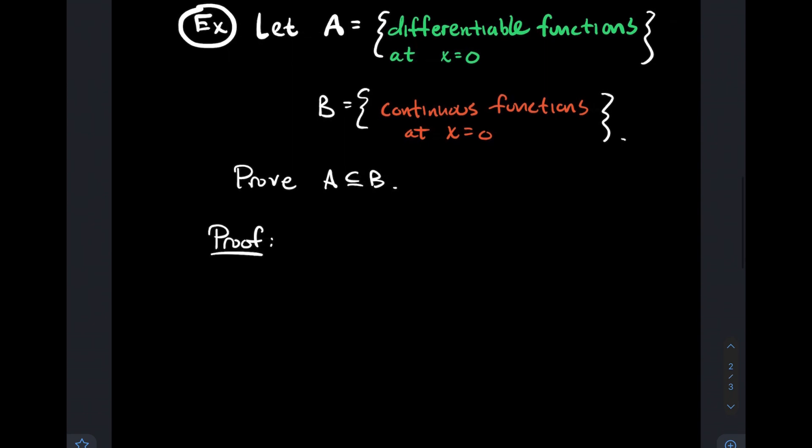Here is the proof. We want to keep that strategy in mind. Part one: let f be an element of A. Where do we start? The goal here is to try to conclude f is an element of B. If we can do that, then we win the game. So f is an element of A. Now I've got to think about what can I say about f. I look up at A, and it says it's a differentiable function at 0.